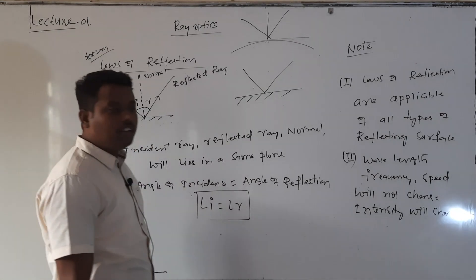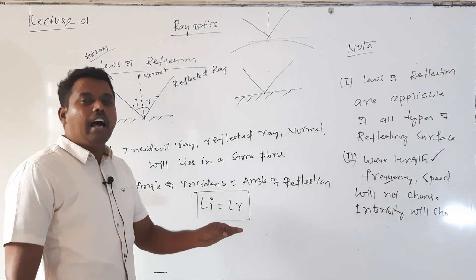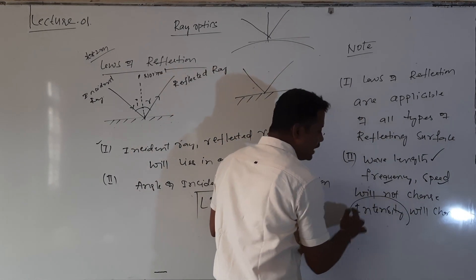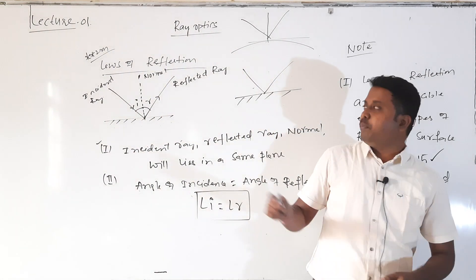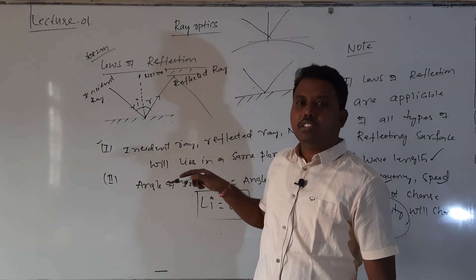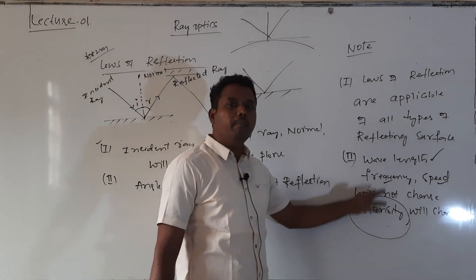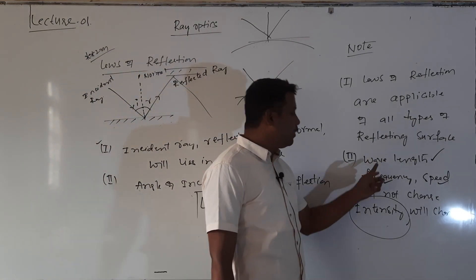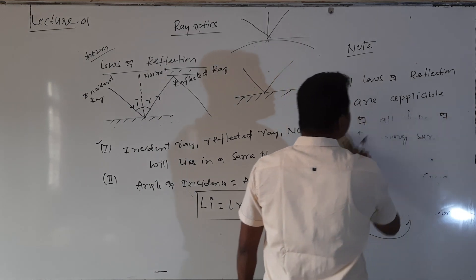Whenever a light ray undergoes reflection, wavelength remains the same, frequency remains the same — frequency is a characteristic property that does not change during reflection or refraction — speed remains the same. Only intensity changes. Whenever a light ray undergoes multiple reflections, the intensity of the reflected ray keeps on decreasing.